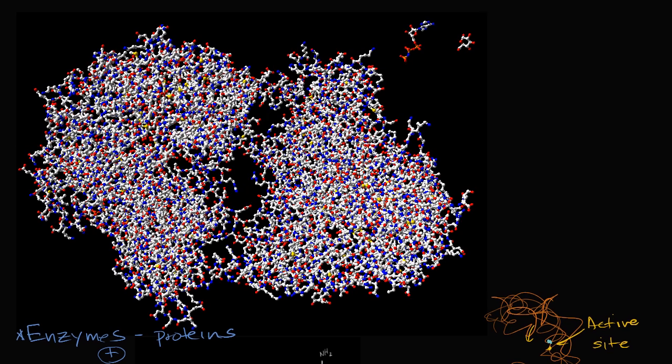So this right over here, this is a visualization of a hexokinase, one variety of it. And just to get a sense of scale, this is a glucose molecule. And this right over here is an ATP. And so they will bind, these are the two substrates, they will bind at the active site.